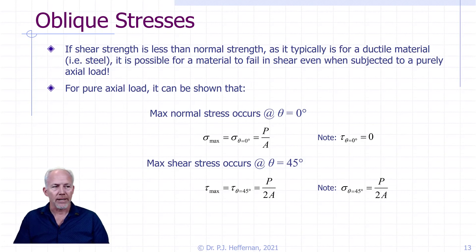And so it can be demonstrated, as I show up here, that the maximum normal stress occurs at our original orientation, theta equals zero degrees, and we know it's equal to p over A. And at that point in this uniaxial bar, we have no shear stress. Shear stress at theta equals zero degrees is equal to zero.